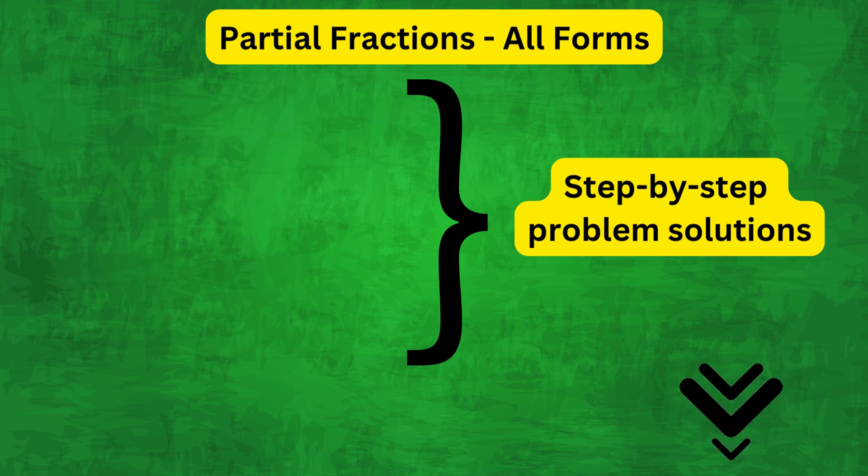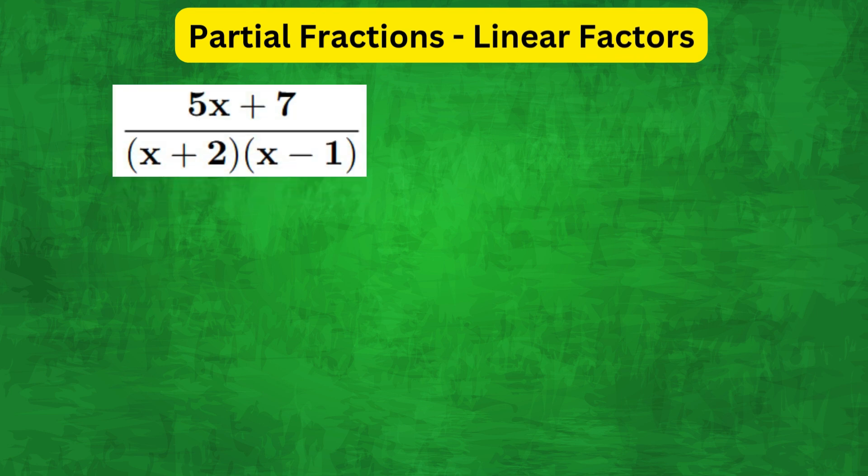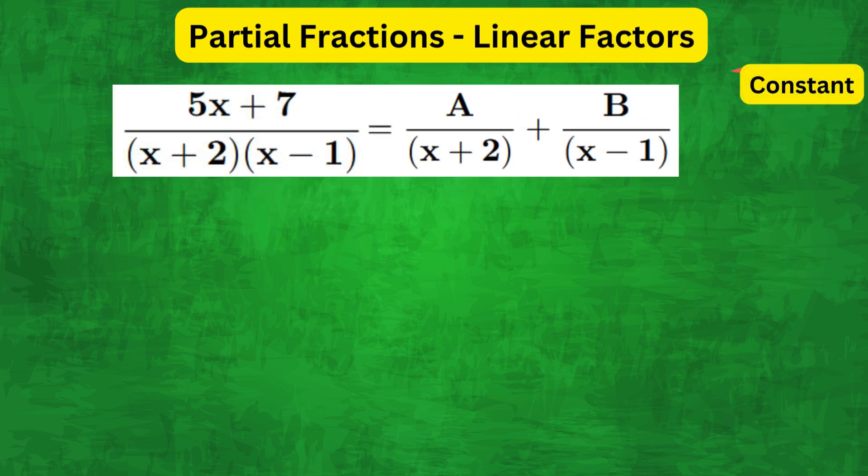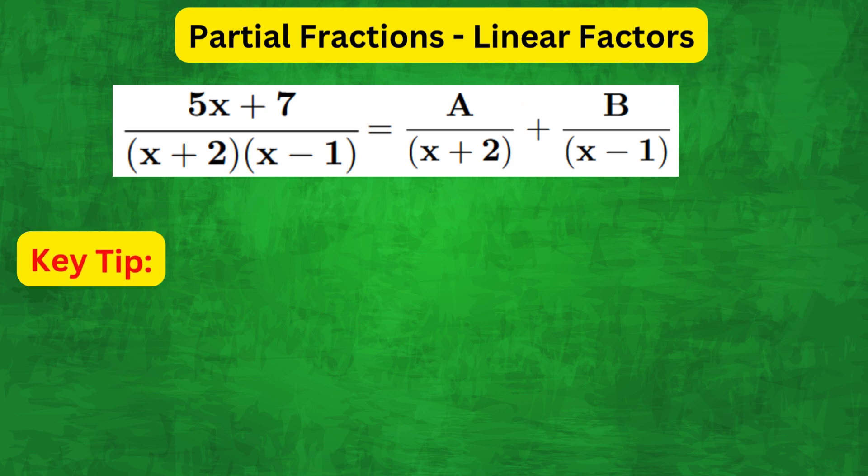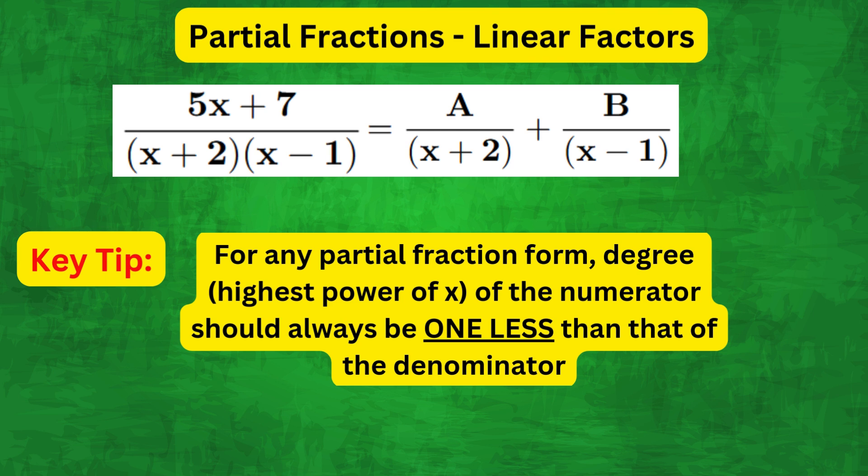Let's start with the case when the denominator consists of distinct linear factors. In this case each fraction will have a constant numerator. It is important to remember that regardless of the partial fraction form, the degree of the numerator always needs to be one less than that of the denominator, and if we keep this rule in mind then things become a lot easier.